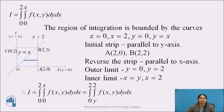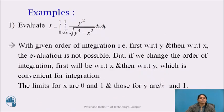Now we will solve examples on evaluation of double integrals by changing the order of integration. The first example is: evaluate I equals integration from 0 to 1, integration from root x to 1, y² upon under root of (y⁴ minus x²), dx dy. Observe the limits: the limits are 0 to 1 and root x to 1. The inner integral is having the limit as a function of x, so these are the limits of y and the outer integral limits are for x. The given order of integration is first with respect to y and then with respect to x. When we integrate first with respect to y, the integration is not possible.